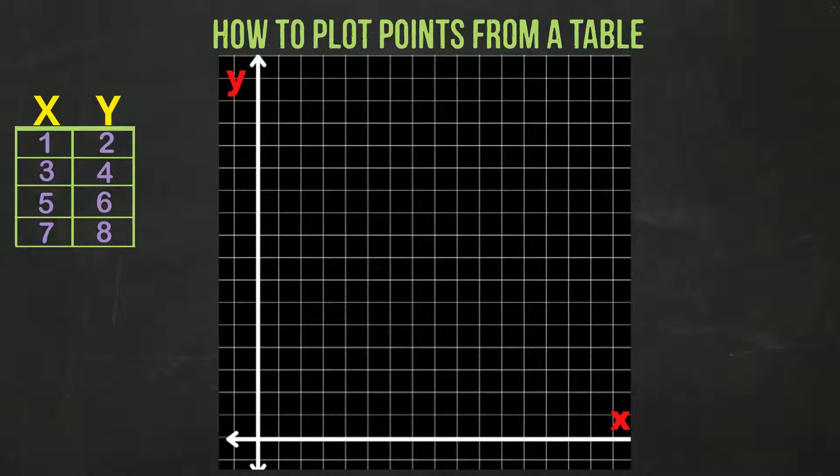Let's look at the first one. x is 1, y is 2. Starting at the origin, we move over to the right one space and move up the y axis 2. Here is the point for our first set of coordinates.